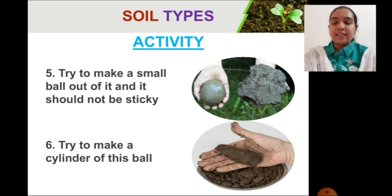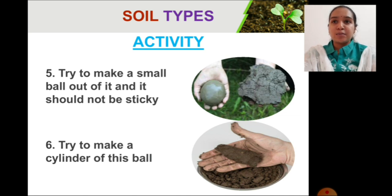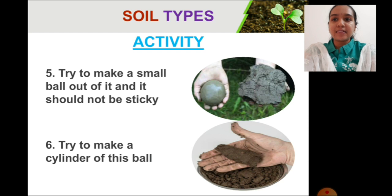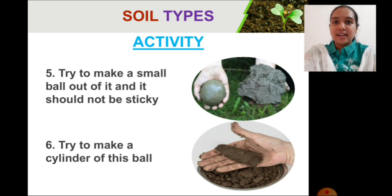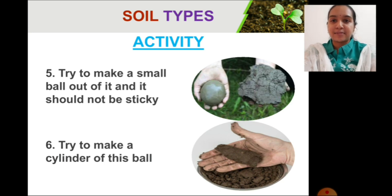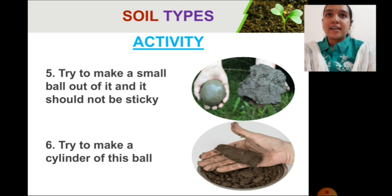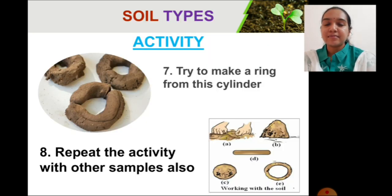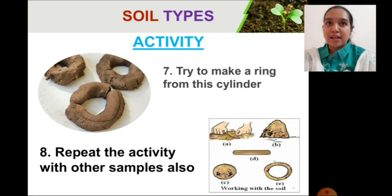In the fifth step, try to make a small ball of the soil you have kneaded. Do not assume you will get the same result as shown in the figure — it is only for reference. In the sixth step, try to make a cylinder of this ball by rolling it on a flat surface, like you do for roti. In the seventh step, try to make a small ring out of the cylinder you have made from the soil sample.